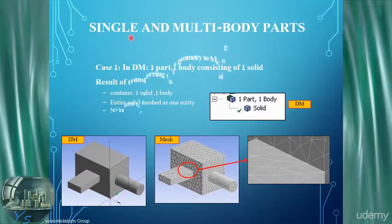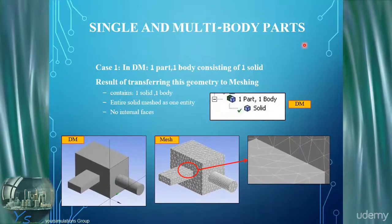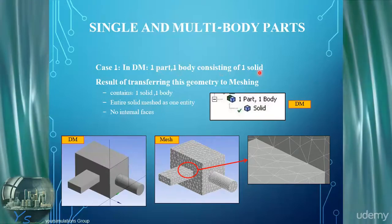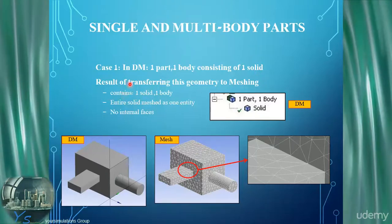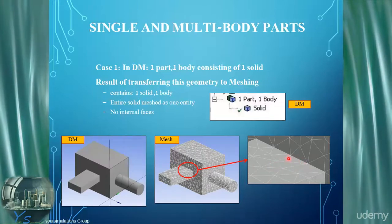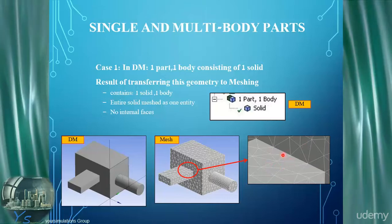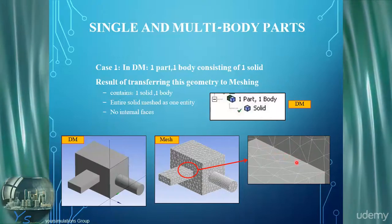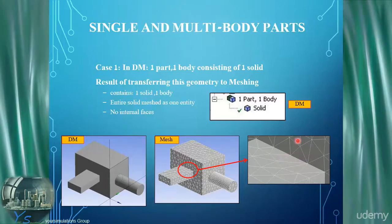Here are examples of separate parts versus multi-body parts. In the first case in DM, we have one part and one body consisting of one solid. Transferring this geometry to meshing gives just one body, meaning the mesh is conformal all the way through. Because this is all one solid, the mesh continues through — at the edge positions on this feature edge, all node positions match up between the two faces, so the mesh is fully conformal.